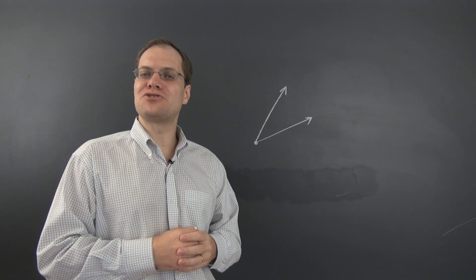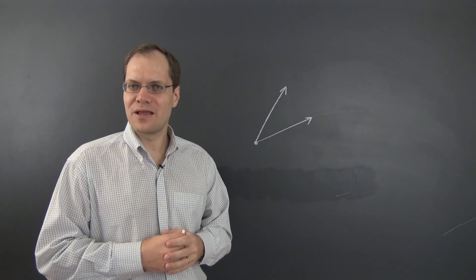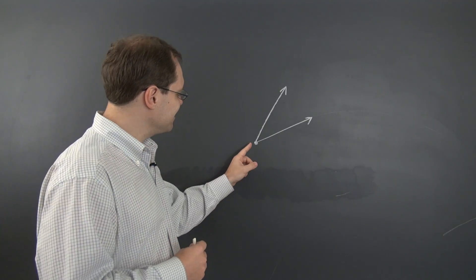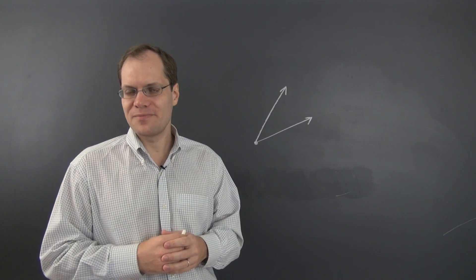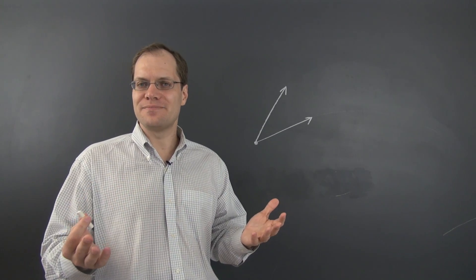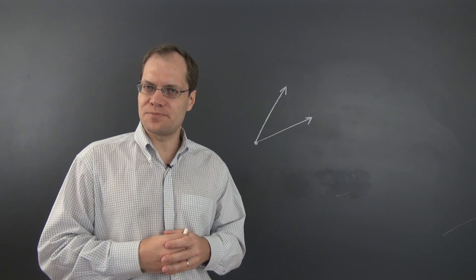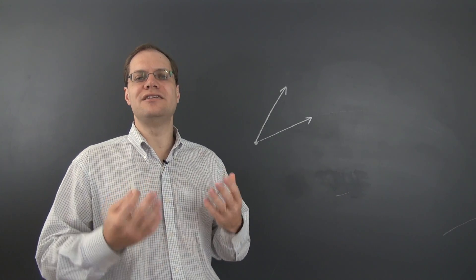Now here's an interesting note about subtraction of geometric vectors. When the two vectors are connected at their tails, it's actually easier to subtract them than it is to add them. Why is that? Well, that's because when it comes to subtraction, there are no additional steps.